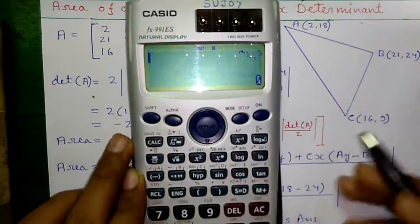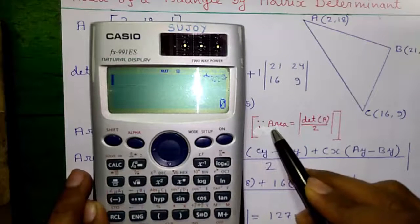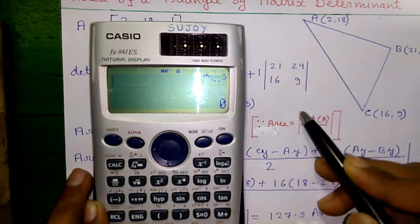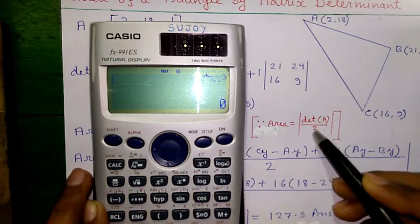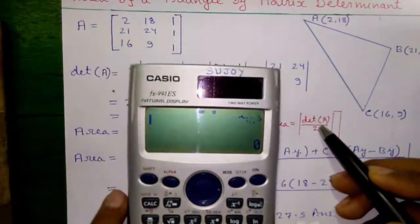Press AC to clear screen. So, the area of the triangle is given by this formula: Area equals to absolute of determinant of matrix A divided by 2. Let us do that.